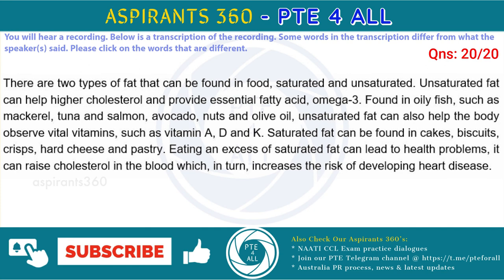There are two types of fat that can be found in food, saturated and unsaturated. Unsaturated fat can help lower cholesterol and provide essential fatty acid, omega-3. Found in oily fish, such as mackerel, tuna and salmon, avocado, nuts and olive oil, unsaturated fat can also help the body absorb vital vitamins, such as vitamin A, D and E. Saturated fat can be found in cakes, biscuits, crisps, hard cheese and pastry. Eating an excess of saturated fat can lead to health problems — it can raise cholesterol in the blood which, in turn, increases the risk of developing heart disease.